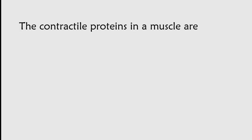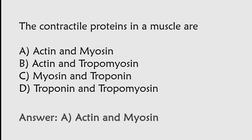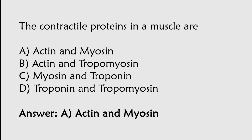The contractile proteins in a muscle are: Actin and Myosin, Actin and Tropomyosin, Myosin and Troponin, Troponin and Tropomyosin. The correct answer is Option A. The contractile proteins in a muscle are Actin and Myosin.